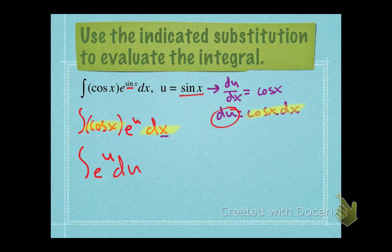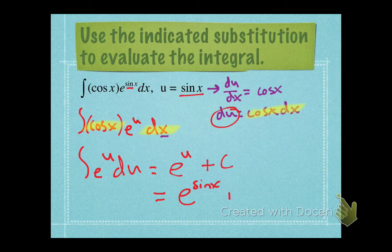Now we have the same variable of integration as inside the integrand. We can find an antiderivative for e to the power of u — it is still e to the power of u, plus c. We don't want to call that our final answer just yet though. We want to re-substitute for u: take sine x and plug it back in for u since that's what we started with. So here is our answer for that indefinite integral found using u-substitution.